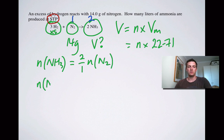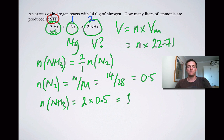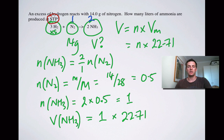Before using the gas formulas, we're given 14 grams of nitrogen, so we use n = mass / molar mass = 14 / 28 = 0.5 moles. Therefore the number of moles of ammonia is 2 × 0.5 = 1 mole. The volume of ammonia equals its number of moles times the molar volume: 1 × 22.71 = 22.71 litres.